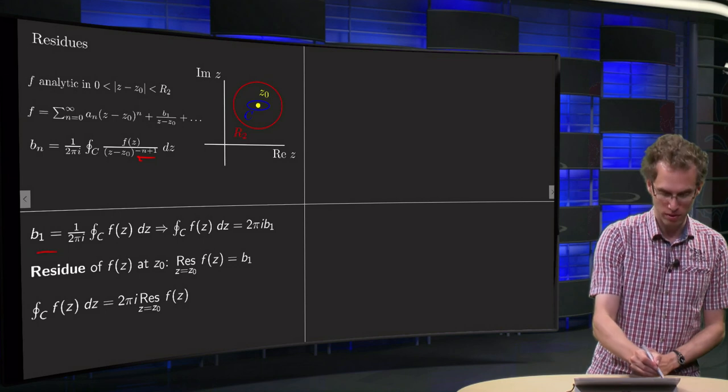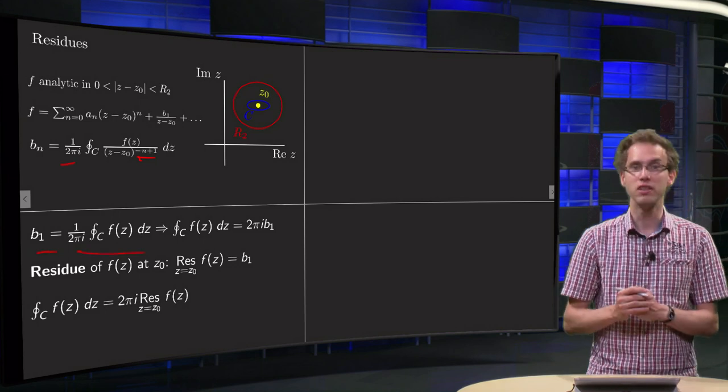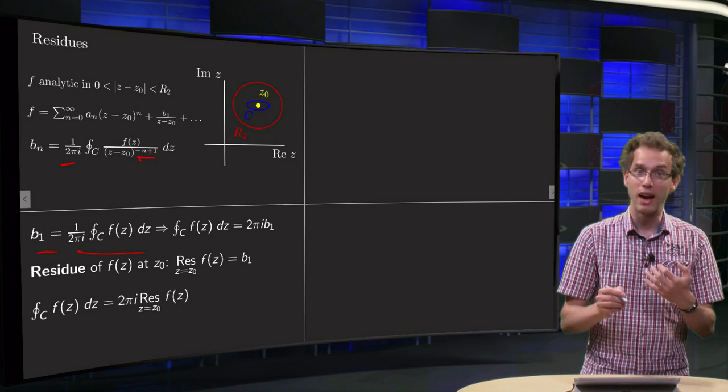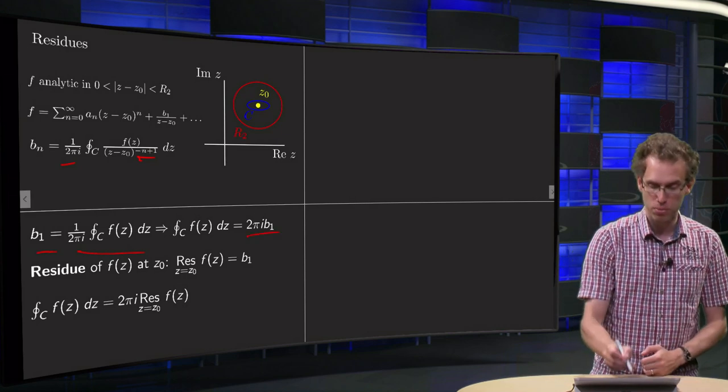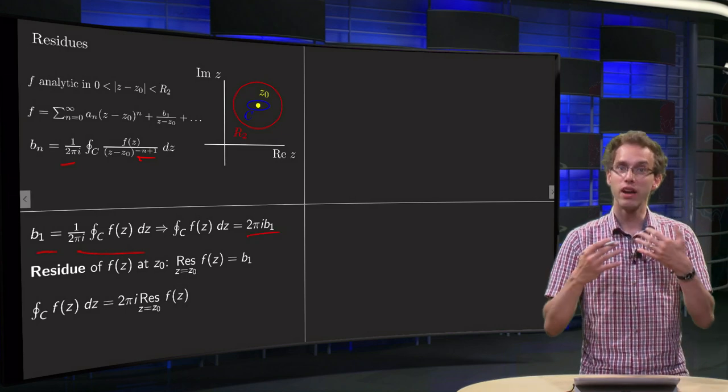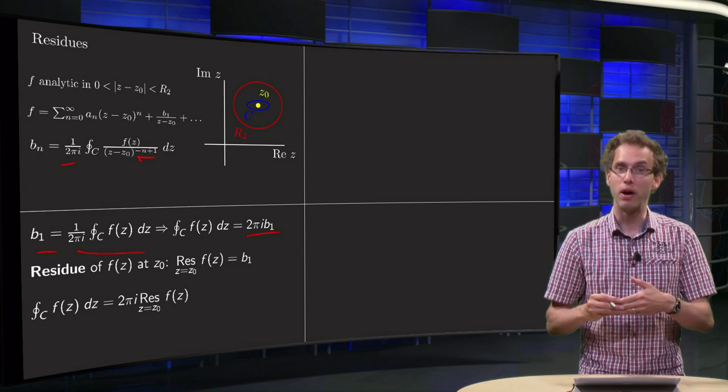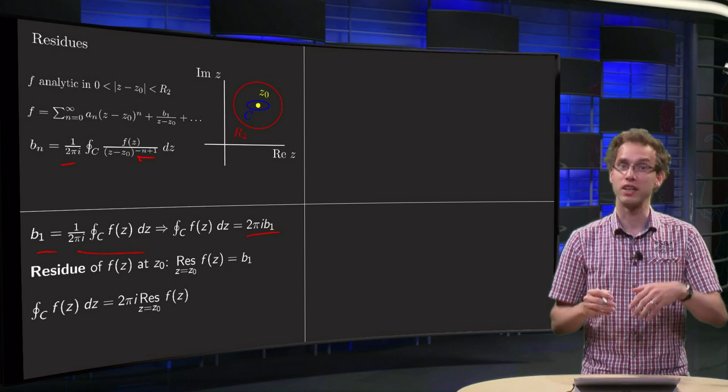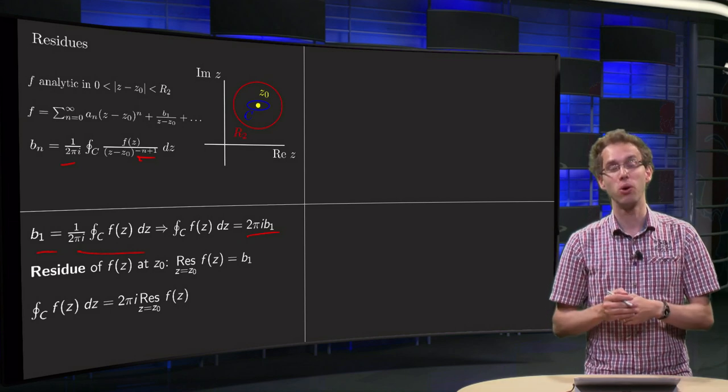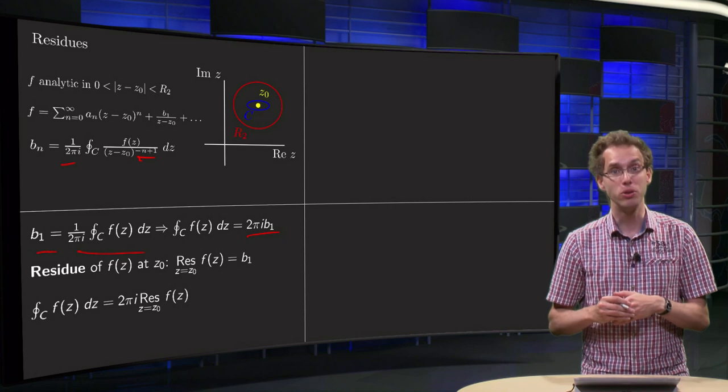And what you are left with is that your b₁ equals 1/(2πi) times just the integral. So that means that your integral equals 2πi times b₁. So that means if you can find your b₁, you only need your b₁ out of your Laurent series, then you can find your integral, and that is how we are going to use it.